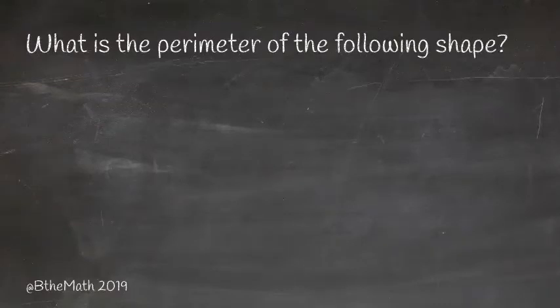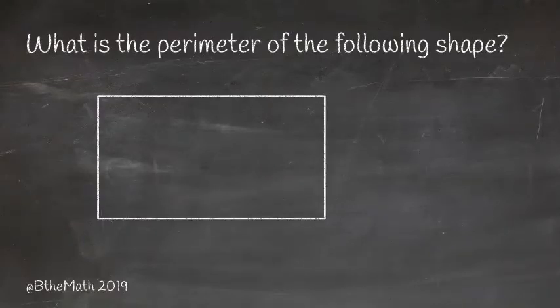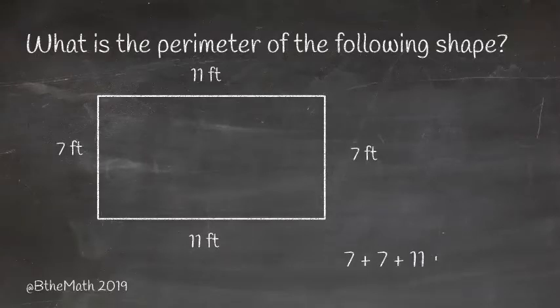What is the perimeter of the following shape? We have a rectangle with sides 7 and 11 feet. Notice the far side is 7 feet and the top would be 11 because they match. This gives us a perimeter of 7 plus 7 plus 11 plus 11, which is 36 feet.